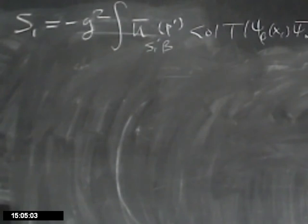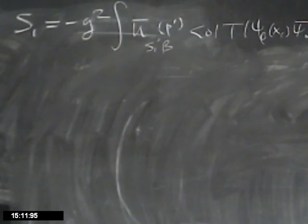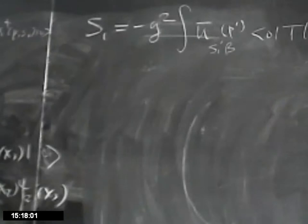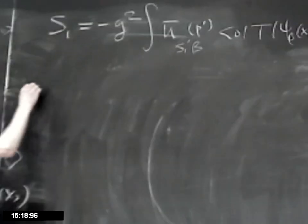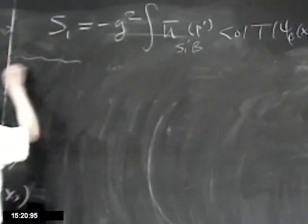With this definition, S1 becomes: ū_{β}(p1' s1') × ⟨0|T[ψ_β(x1) ψ̄_α(x2)]|0⟩ × u_α(p1 s1), times the phase factors e^{i(p1'+p2')·x1} e^{-i(p1+p2)·x2}, integrated over x1 and x2. That was S1, corresponding to the diagram with momentum p1+p2 flowing through the internal line.